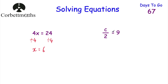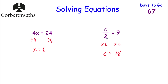Next: C over 2 equals 9, or C divided by 2 equals 9. We don't want the divide by 2, so we multiply both sides of the equation by 2. C divided by 2 multiplied by 2 leaves us just with C. On the right-hand side, 9 multiplied by 2 is 18. So C equals 18. Let's check: 18 divided by 2 is 9. Well done.